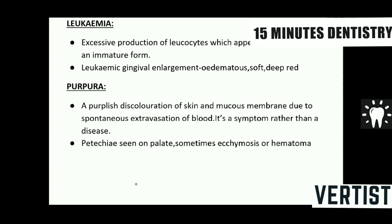In leukemia, the patient may present with gingival enlargement that is edematous and soft. The blood report will show a distinct abnormality in the number of leukocytes — excessive production, with counts rising above 90,000 or one lakh. More importantly, the peripheral blood smear shows immature blast cells in peripheral circulation. Excessive production of leukocytes with immature cells in the peripheral blood smear indicates leukemia.